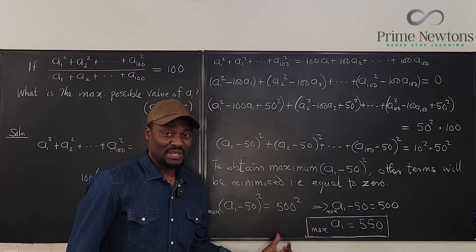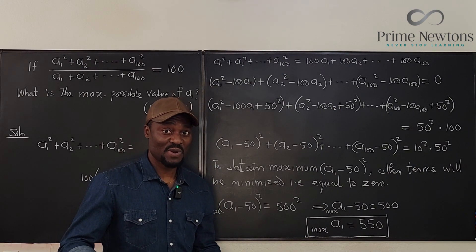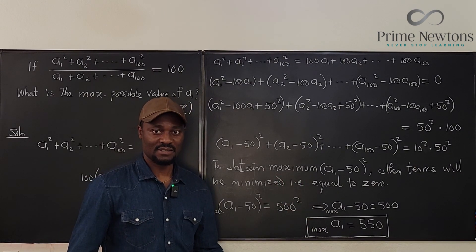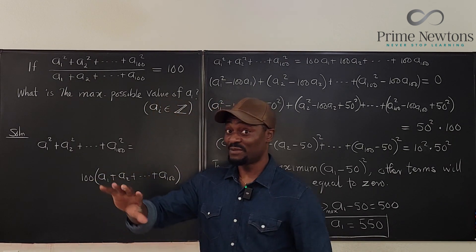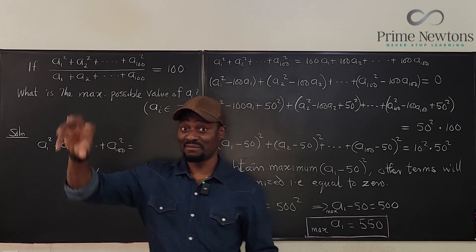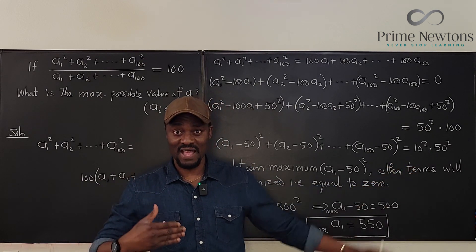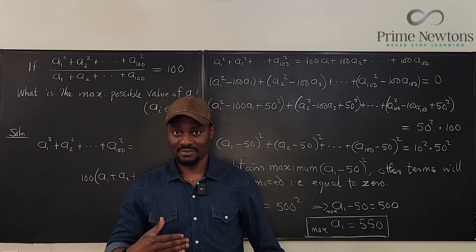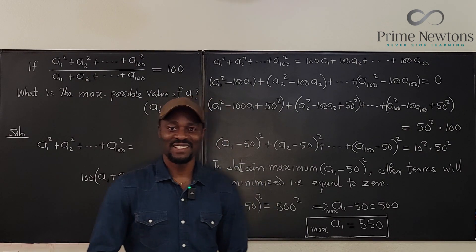I like this problem because anybody who thinks about it, who knows how to do completing the squares, will be able to answer this. That's all you need. And the reasoning that if something that is in a sum is maximized, the other things have to be minimized for you to maintain that sum. Never stop learning. Those who stop learning, stop living. Bye-bye.